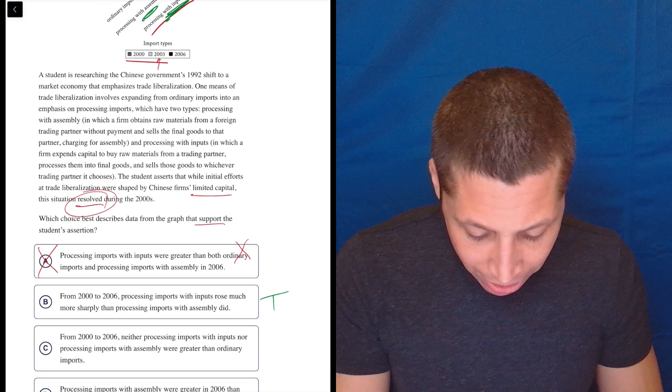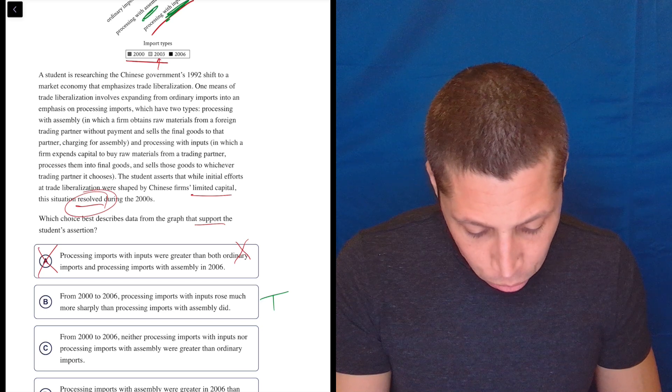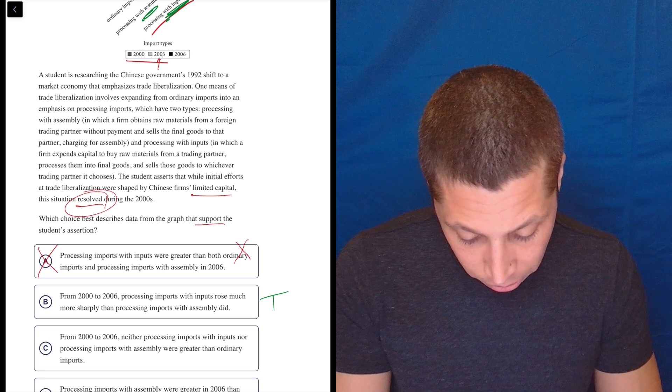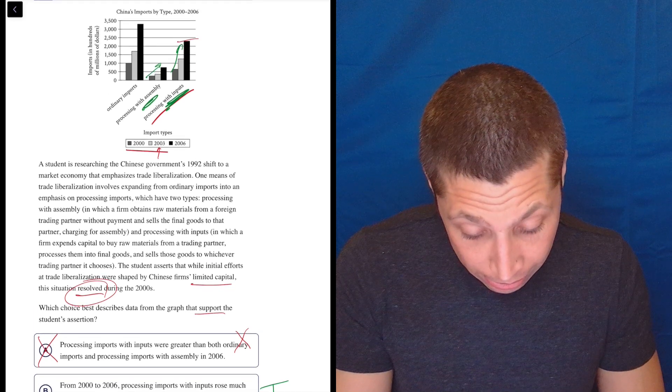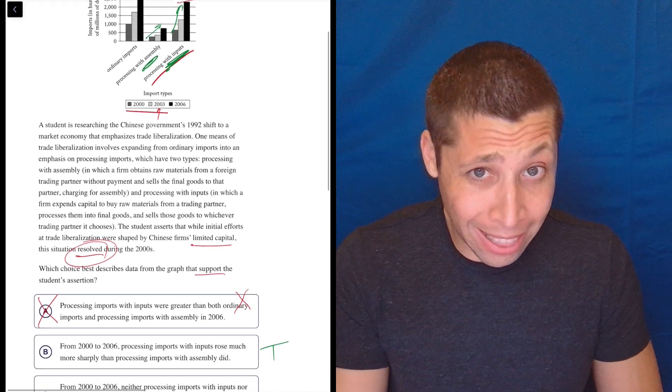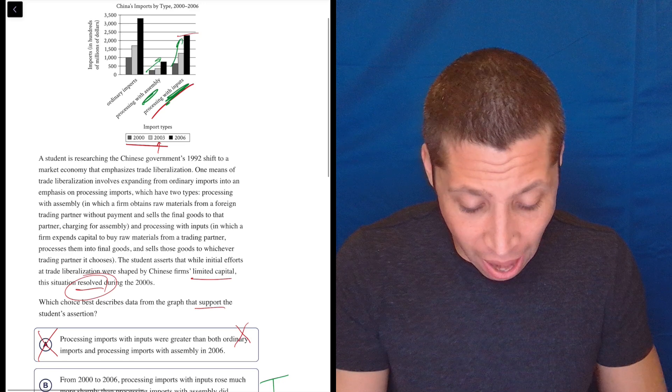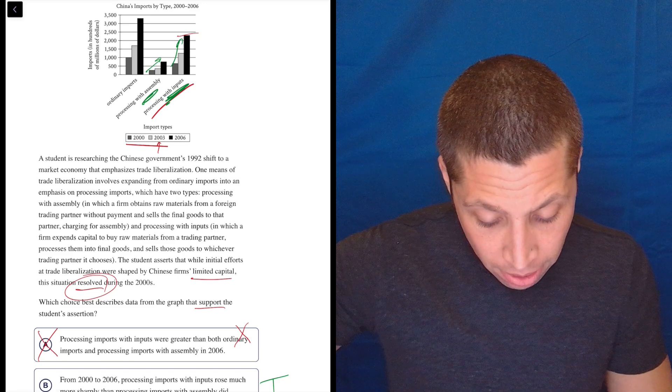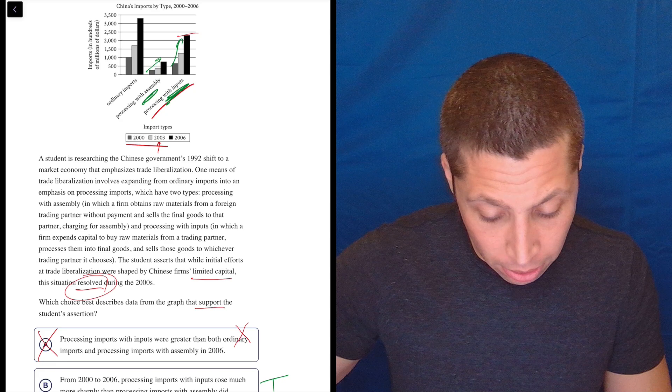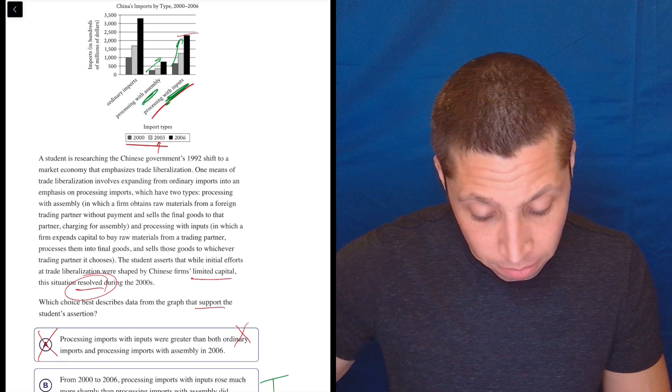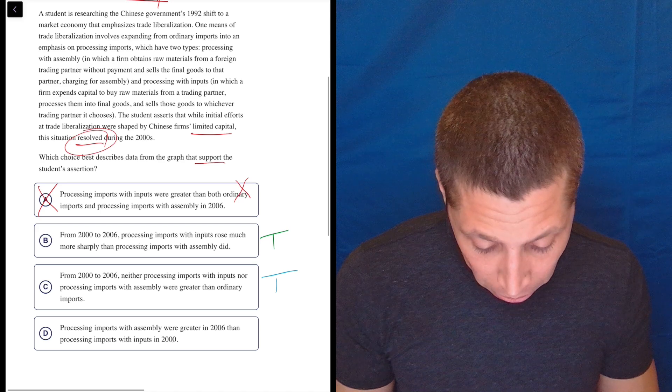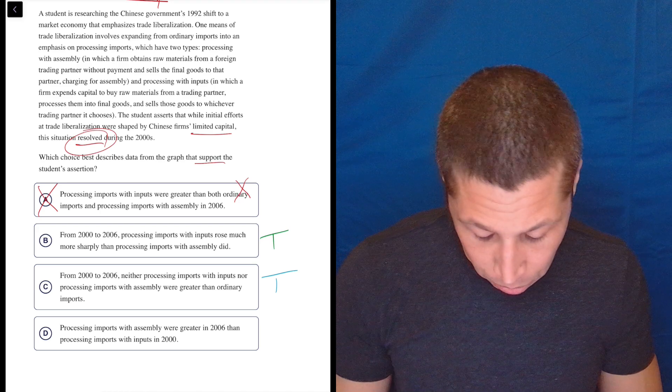From 2000 to 2006, neither processing imports with inputs nor processing imports with assembly were greater than ordinary imports. I think so, right? I mean, obviously the processing in 2006 is taller than the ordinary imports in 2000 and 2003, but we would want to compare year to year. So I think this is also true. Again, I don't know what it means, but we'll move on.